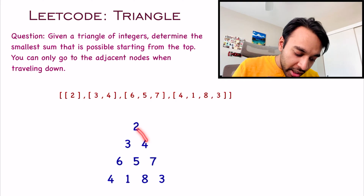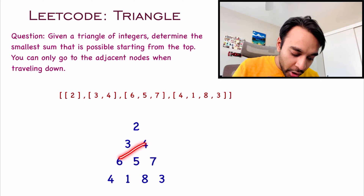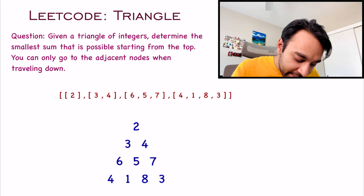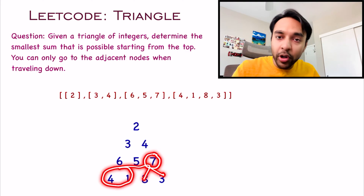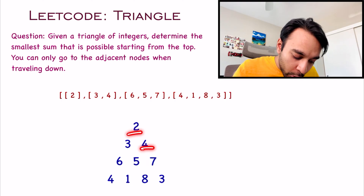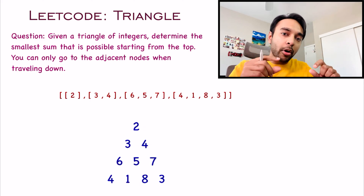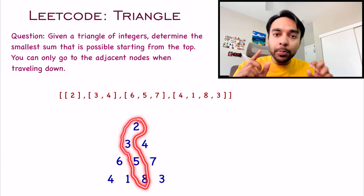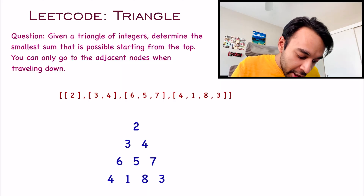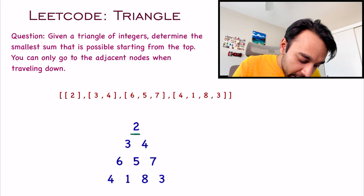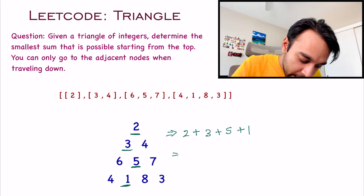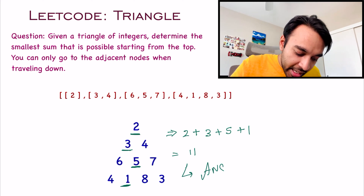If you come at 3, then you can only go to either 6 or 5 — you cannot go to 7. But if you come at 4, then you can only go to 5 and 7, and you cannot go to 6. This will keep on happening as you move down. If I reach 7, then I can only advance to 8 and 3, not to 4 and 1. You have to select elements such that the sum you form is the minimum. In this test case, the minimum sum is formed by selecting 2, then 3, then 5, then 1, giving a sum of 11.